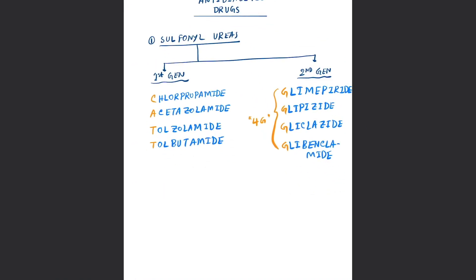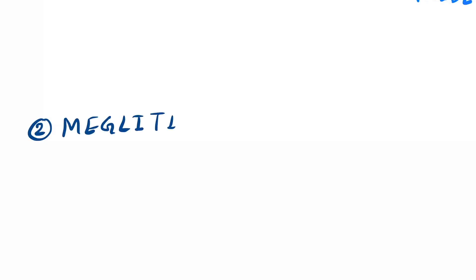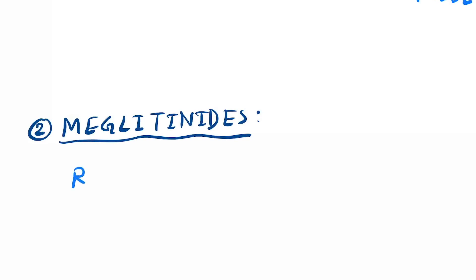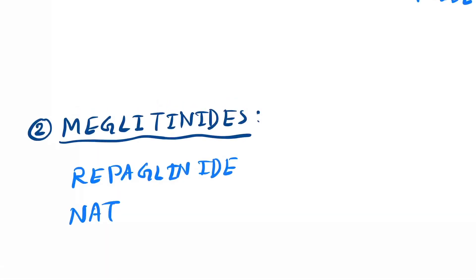So that was sulfonylureas. The next category of drugs is meglitinides. There are only two drugs in meglitinides: repaglinide and nateglinide.